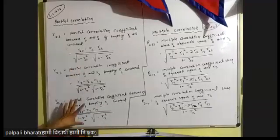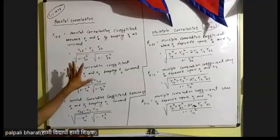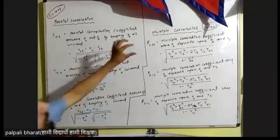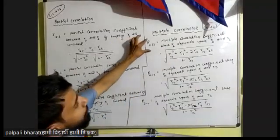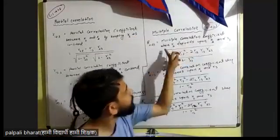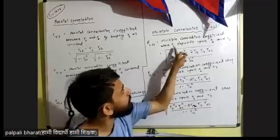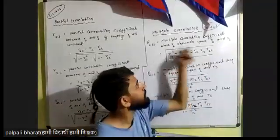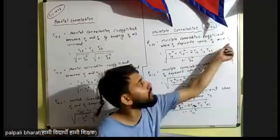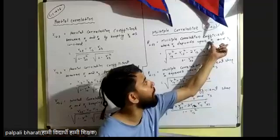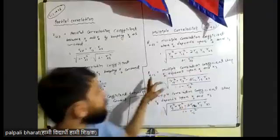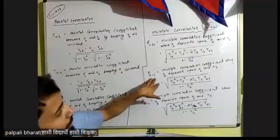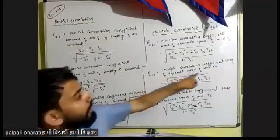In this case, we have multiple correlation. Multiple correlation is the same. x1 depends upon x2 and x3. x3 depends on x2 and x3, and we have multiple correlation.